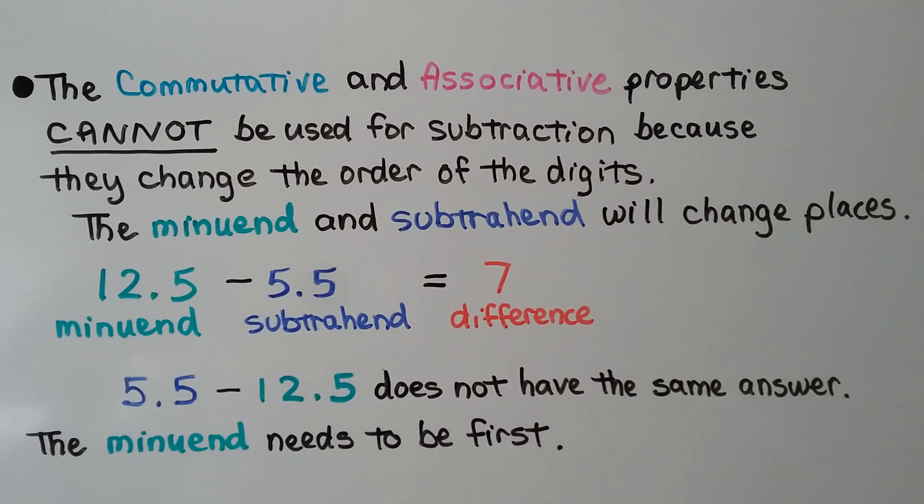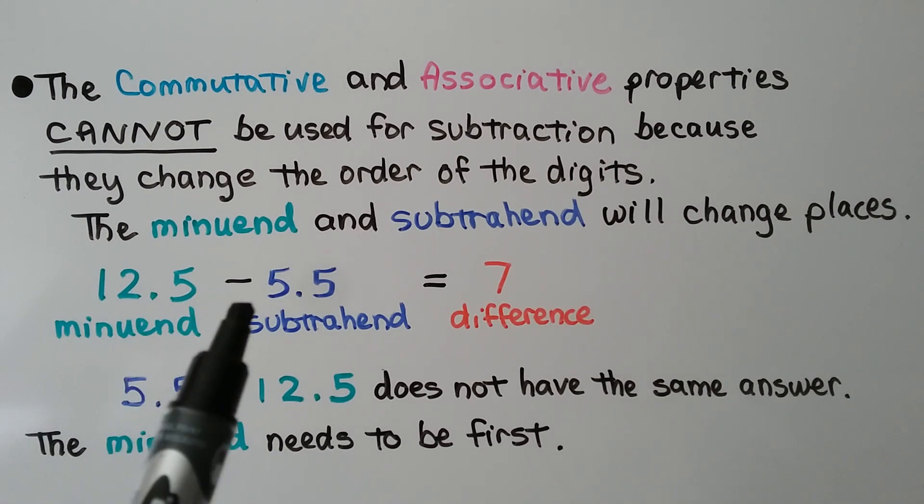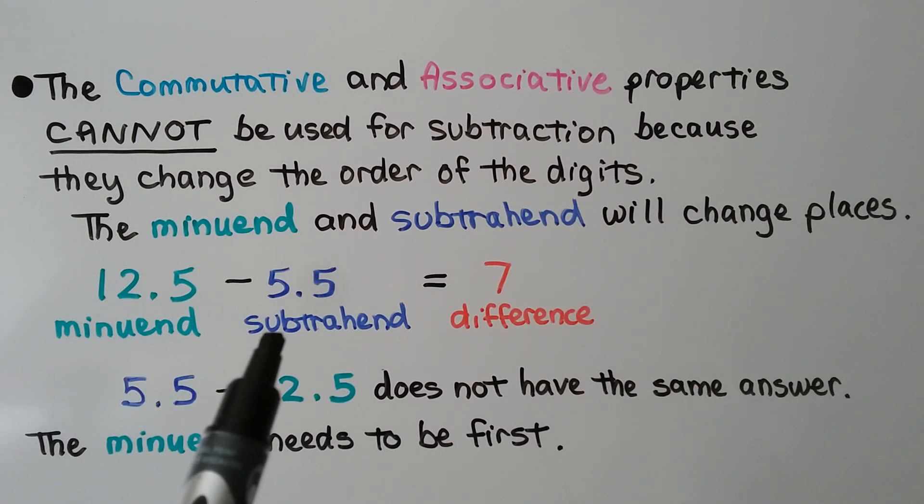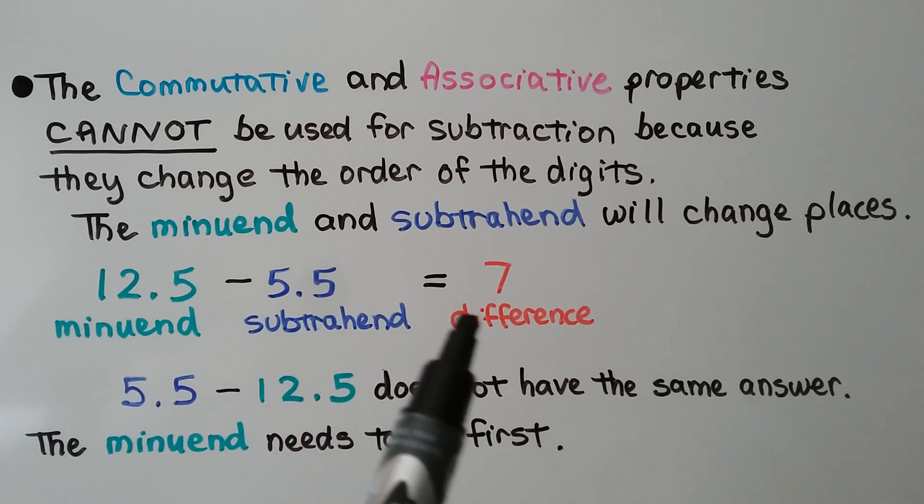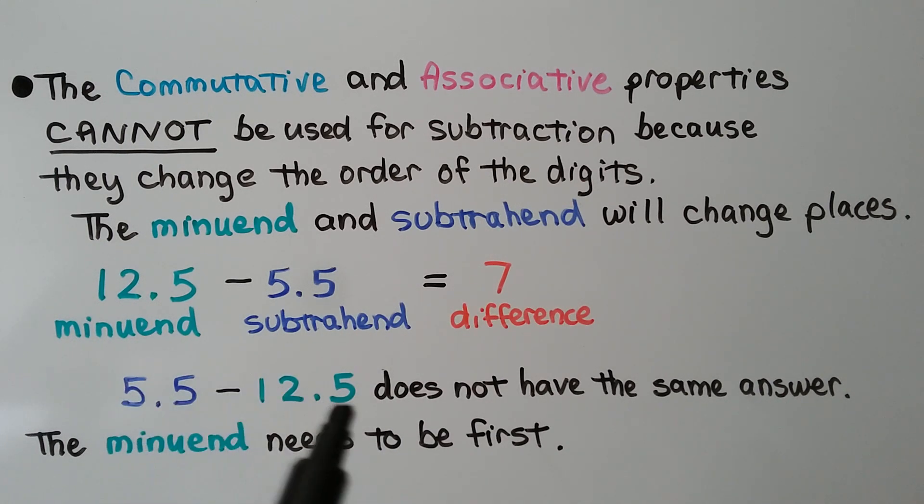The commutative and associative properties cannot be used for subtraction because they change the order of the digits. The minuend and subtrahend will change places. If our minuend is 12.5 and we're subtracting our subtrahend 5.5, our difference is going to be 7. If we change places, we would have 5.5 minus 12.5.